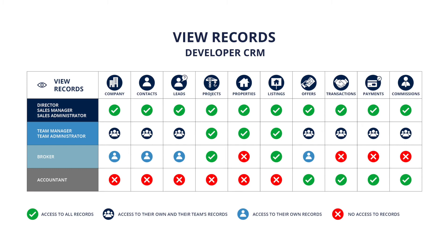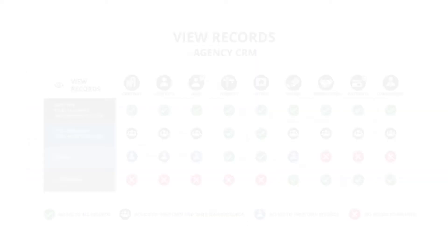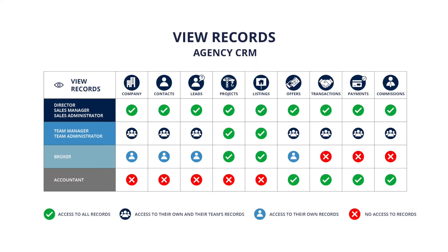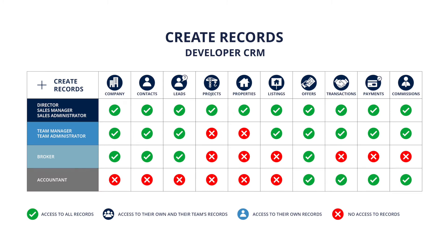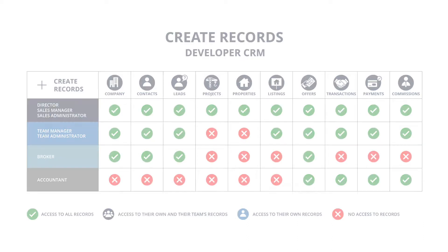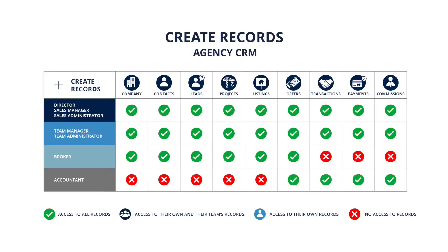The exception to these rules is that every profile, except Accountant, can view all listings and project records. Also, the broker profile does not have access at all to the transaction and related modules of payment that the internal broker and Accountant have. There are differences between the developer and agency CRM when it comes to records of projects, properties, and listings, and these tables highlight the differences.